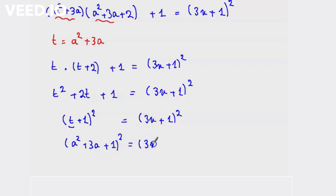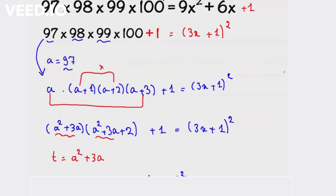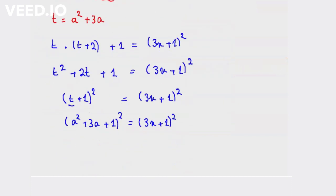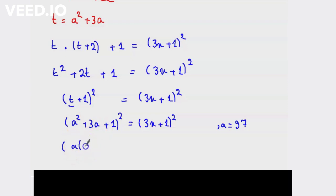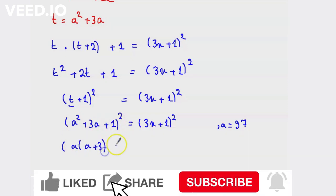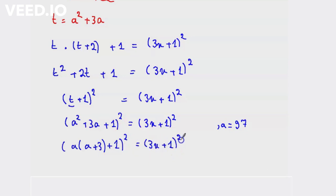And we know that a is equal to 97. But before we substitute a equal to 97, let's take a as a common factor here to make it easier. So a times (a + 3) plus 1 all squared equal to (3x + 1)².